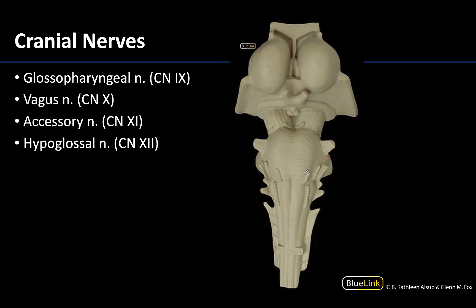Cranial nerves 9, 10, and 12 originate on the medulla oblongata, not far from the pons. The glossopharyngeal is more superiorly located, with the vagus, cranial nerve 10, close but a little more distal. The hypoglossals are more medially oriented and inferiorly positioned. The accessory nerves originate from the spinal cord, so it makes sense that they are the most inferiorly located on this model.